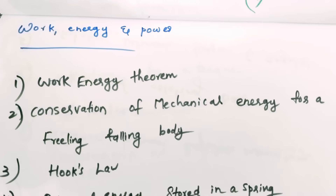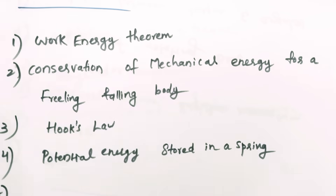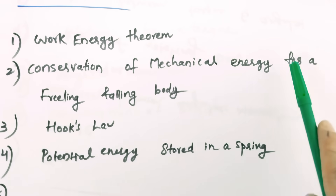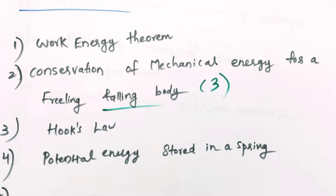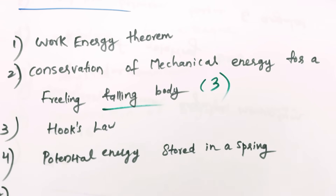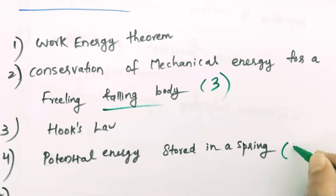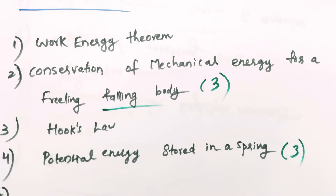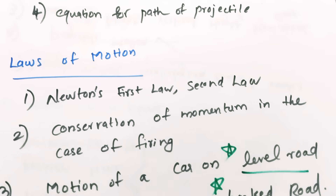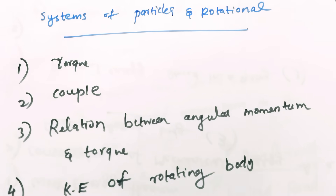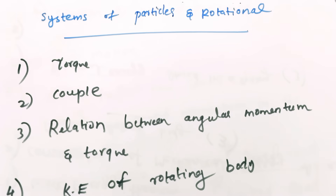In the chapter, Work, Energy, and Power — state and prove the Work-Energy theorem. Conservation of mechanical energy for a freely falling body — 3 marks, show you the derivation. Hooke's law, potential energy stored in a spring — that's the 3 marks. This covers both theory and derivations, as well as numerical questions. If you learn this, you will score 60 marks.